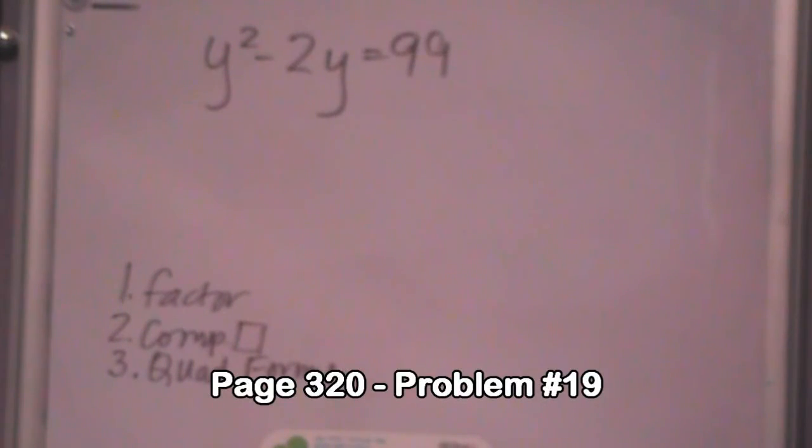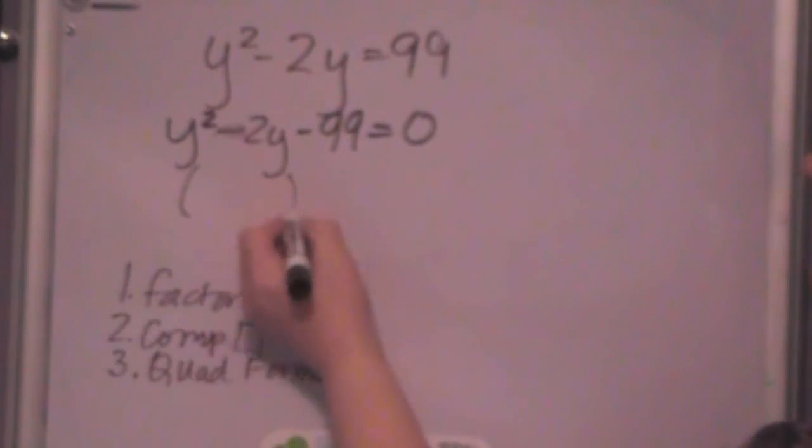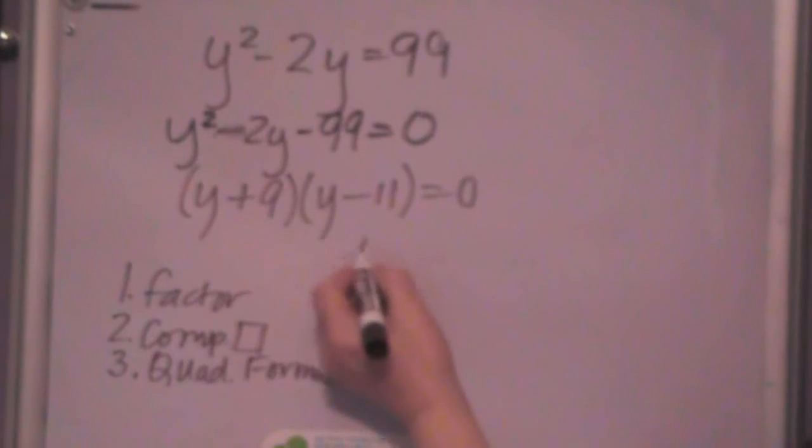Again, for this quadratic, get it in standard form. Y squared minus 2y minus 99 equals 0. Now, you might not know all your factors of 99, but really 11 times 9 works here. So, actually, believe it or not, this one factors very easily. Y and y and 11 and 9. And I want the negative on the 11 and the positive on the 9. So, y is equal to negative 9, or 11.